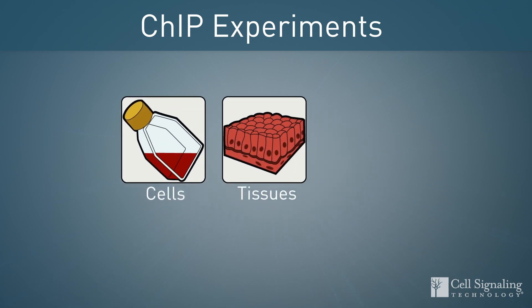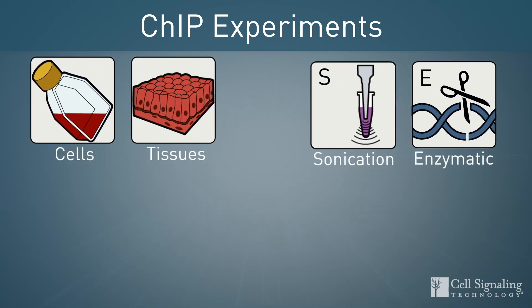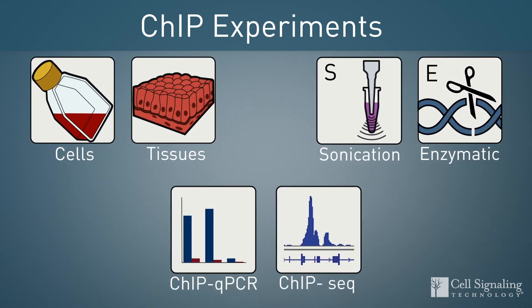ChIP experiments can use varying input samples, chromatin fragmentation methods, and provide ChIP-qPCR or ChIP-seq readouts.